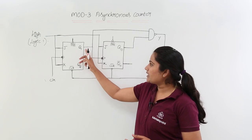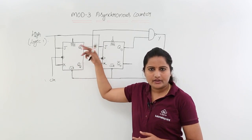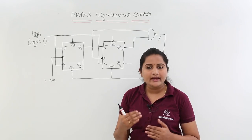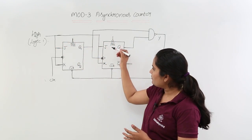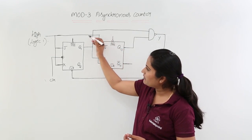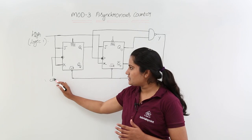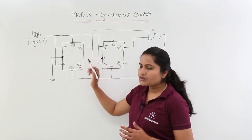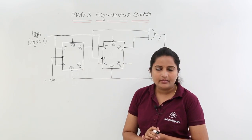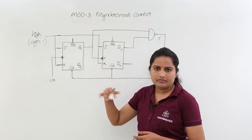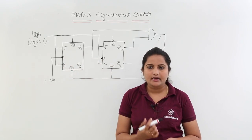When a clock pulse occurs, whatever state is there is going to toggle. On the second clock it toggles again, third clock again, and so on, maintaining that toggle condition. We have given active-high for both flip-flops on J and K, maintaining them in toggle condition. You can also observe the bubble on the clock input, which represents negative-edge triggering.